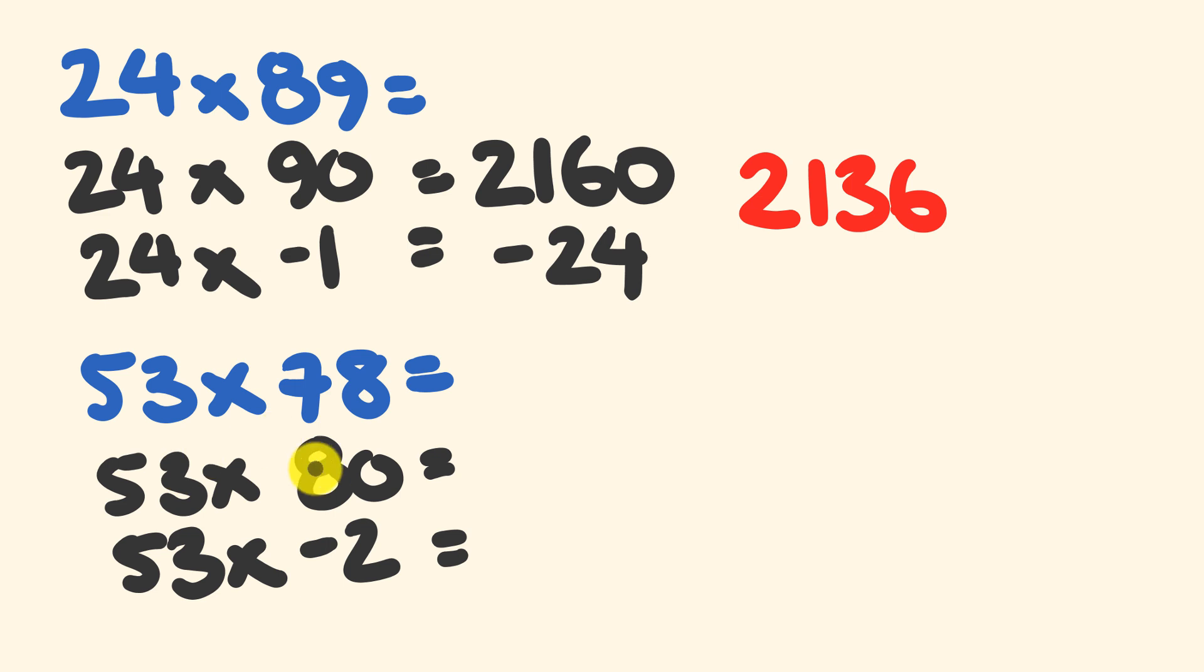So first of all, we have 53 multiplied by 80. So 50 times 80 is 4000, 3 times 80 is 240. So we have 4240 when we put those together.